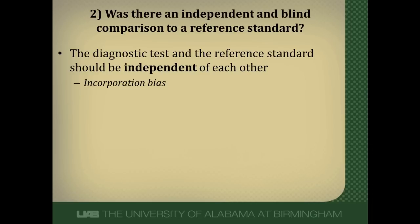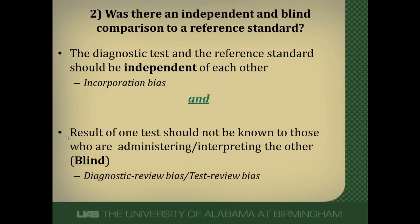For pulmonary embolism, I don't want the results of the VQ scan to be included in the positivity criterion for pulmonary embolism along with the reference standard angiography. Having that would be an example of incorporation bias. The other component is blinding — we don't want the people reading the angiogram to know the result of the VQ scan, and vice versa. If that happens, that's called diagnostic review or test review bias.